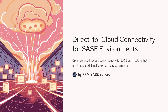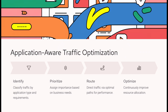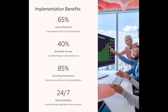Direct-to-cloud connectivity: Azure AD joined devices in a SASE environment enable direct-to-cloud connectivity, eliminating the need for traffic to be backhauled through corporate data centers. This enhances performance and reduces latency when accessing cloud resources. Application-aware SASE solutions prioritize and route traffic based on specific requirements, supporting distributed workforces and multiple office locations. By leveraging global points of presence (POPs) and software-defined networking, SASE architectures intelligently route traffic across direct cloud connections and SD-WANs, improving application performance.